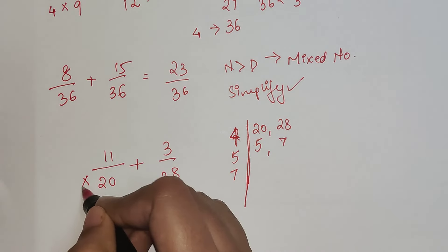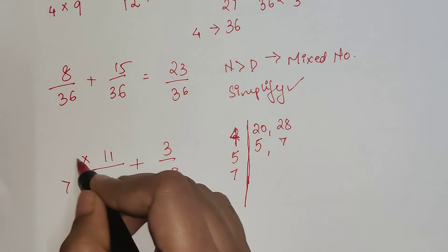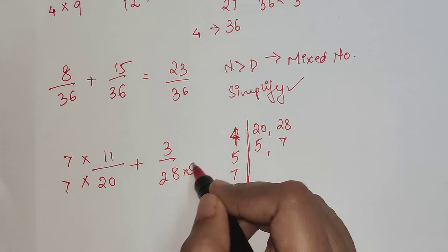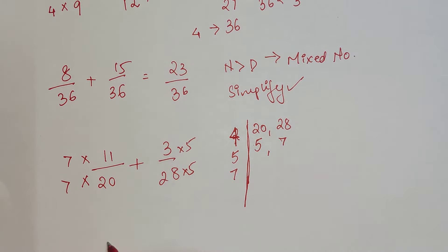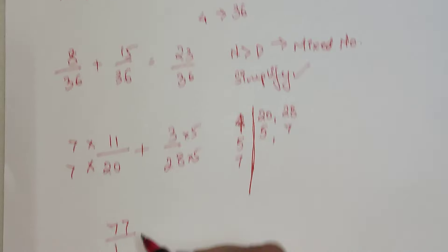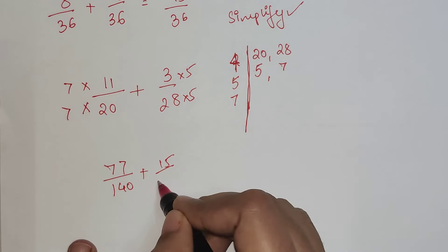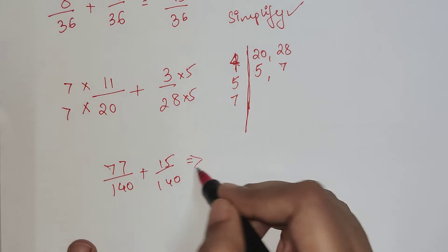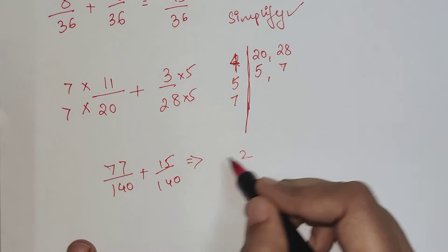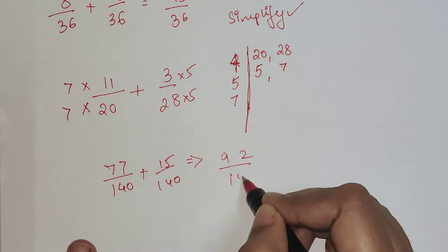That gets you 140. So here I will multiply this with 7, and here I will multiply this with 5. So this is 77 upon 140 plus 15 upon 140. That gets me 92 upon 140.